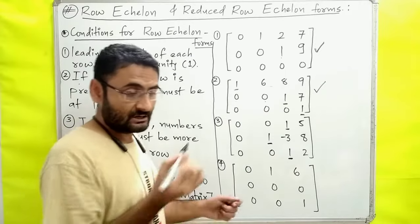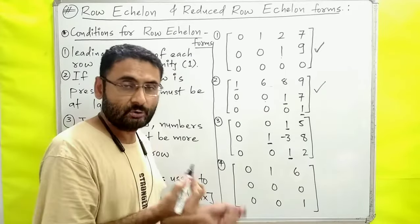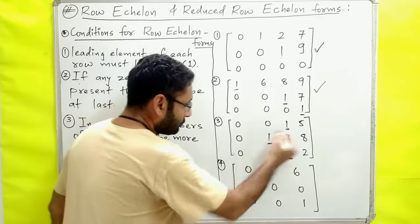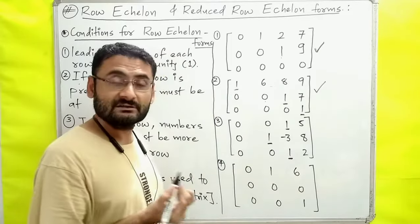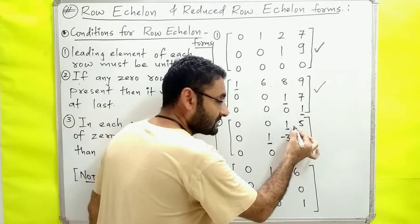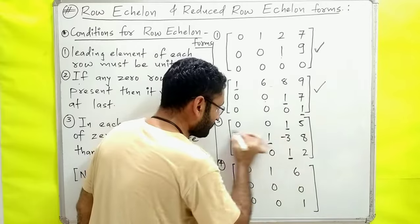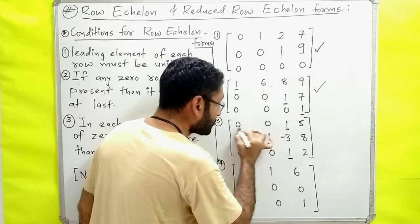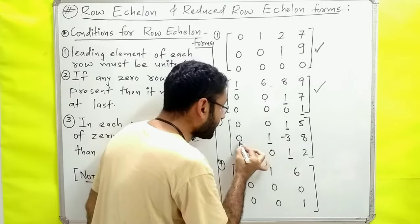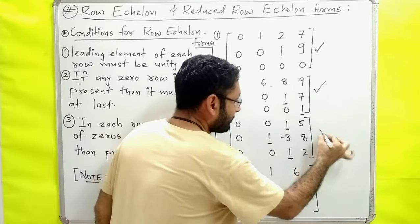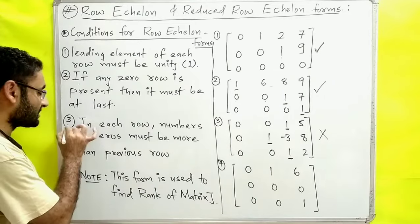The leading element is 1. The second condition: if there is a zero row, it should be at the last. There is no zero row here, so the second condition is satisfied. The third condition: first row has 0 zeros, second row has 2 zeros, third row has 3 zeros — each row has more zeros than the previous. This satisfies the echelon form conditions.